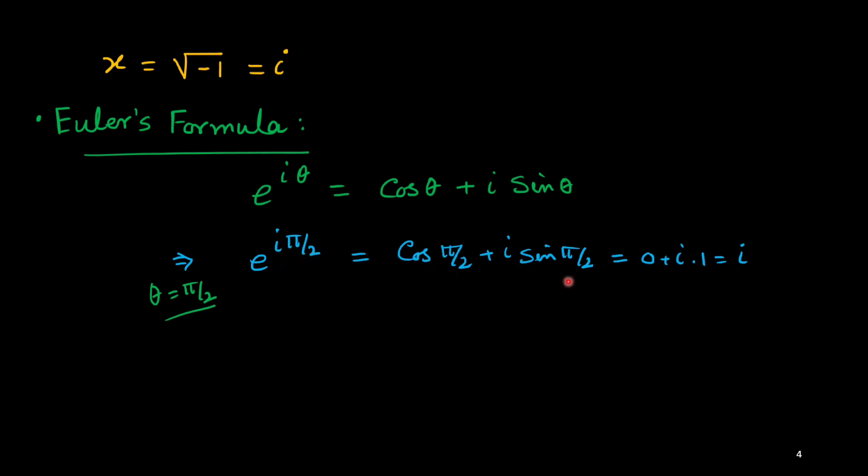Cos 90 degrees equals 0, and sin 90 degrees equals 1. Thus, it is 0 plus i times 1, which is i. In other words, small i can be replaced by e to the power i pi by 2.